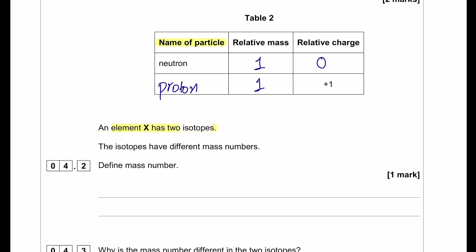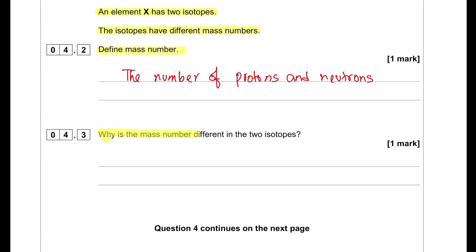An element X has two isotopes. The isotopes have different mass numbers. Define the term mass number. When we want to define the term mass number, we have to understand that the number of protons plus the number of neutrons makes the mass number. Why is the mass number different in two isotopes? The isotopes have different numbers of neutrons, thereby having a different mass number.